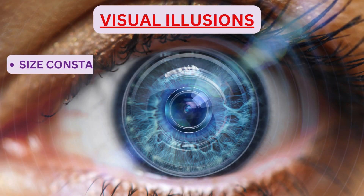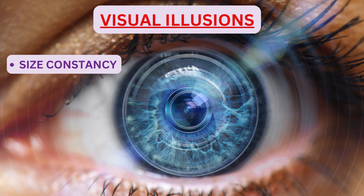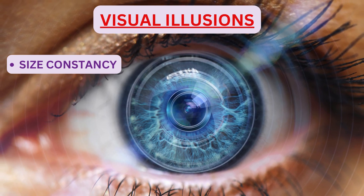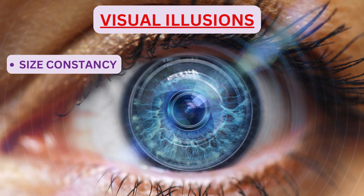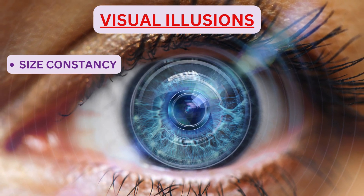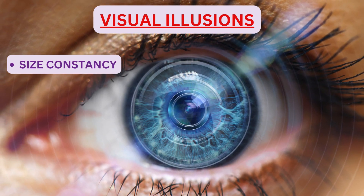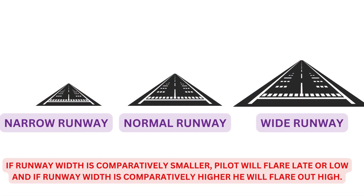Next is size constancy. The size of an object is extremely important in judging distances. During landing, if the runway width is comparatively smaller, the pilot will flare late and low. And if the runway width is comparatively wider, then he'll flare out high.